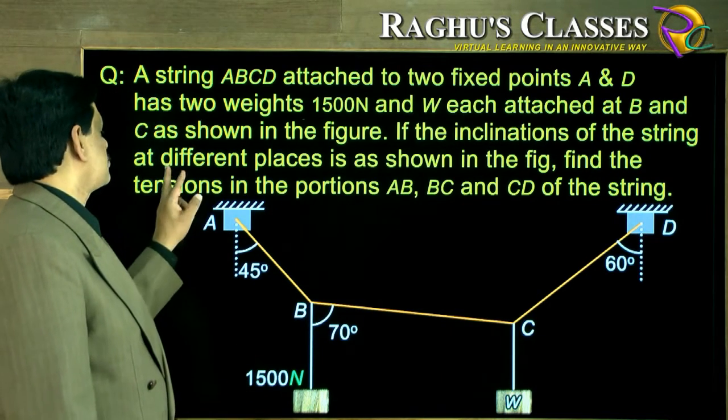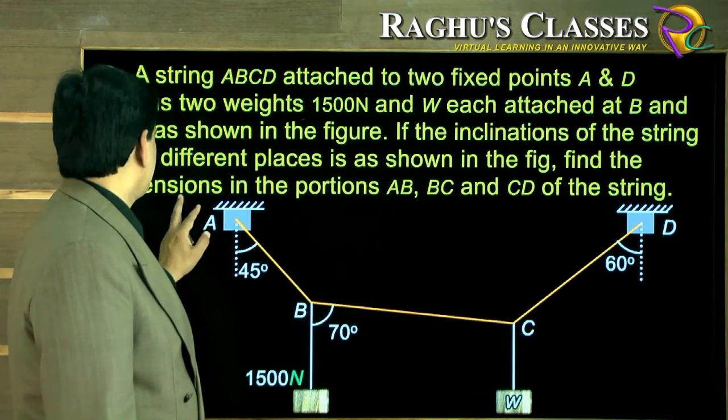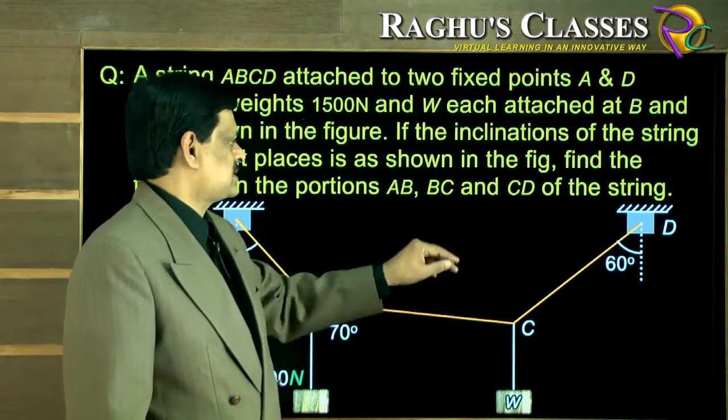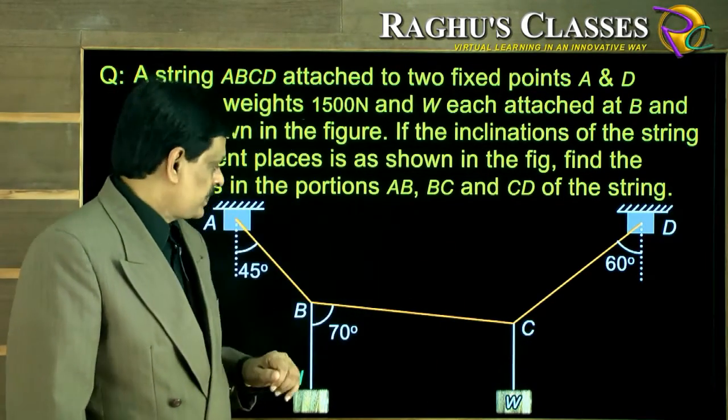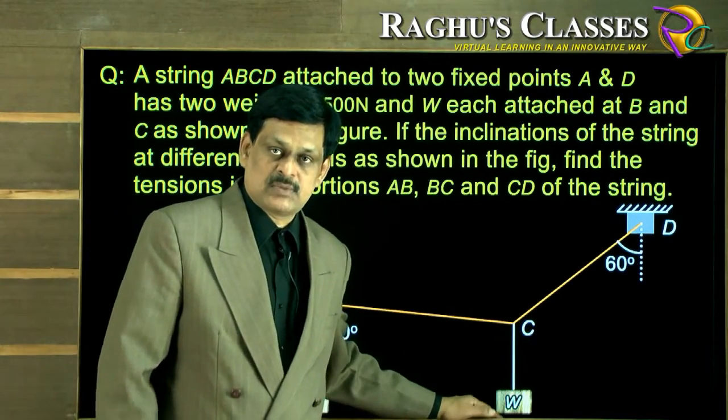If the inclinations of the string at different places is shown in the figure, find the tensions in the portions AB, BC, CD in the string. And of course it is not asked there, but we can as well find the weight W hanged here.